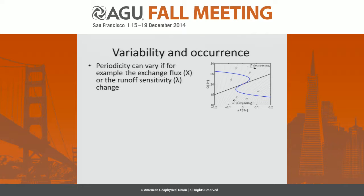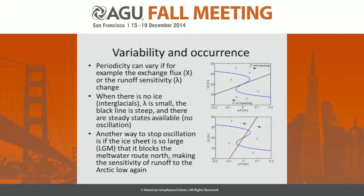Dansgaard-Oeschger events do not occur on regular timescales — they have variable periodicity. The periodicity can vary if either the exchange flux between the Arctic and Atlantic varies, or if the runoff sensitivity changes. In particular, you can get periods when there are no oscillations at all — for instance, if there's no ice as in an interglacial, then lambda (the sensitivity of runoff to temperature) is very small.